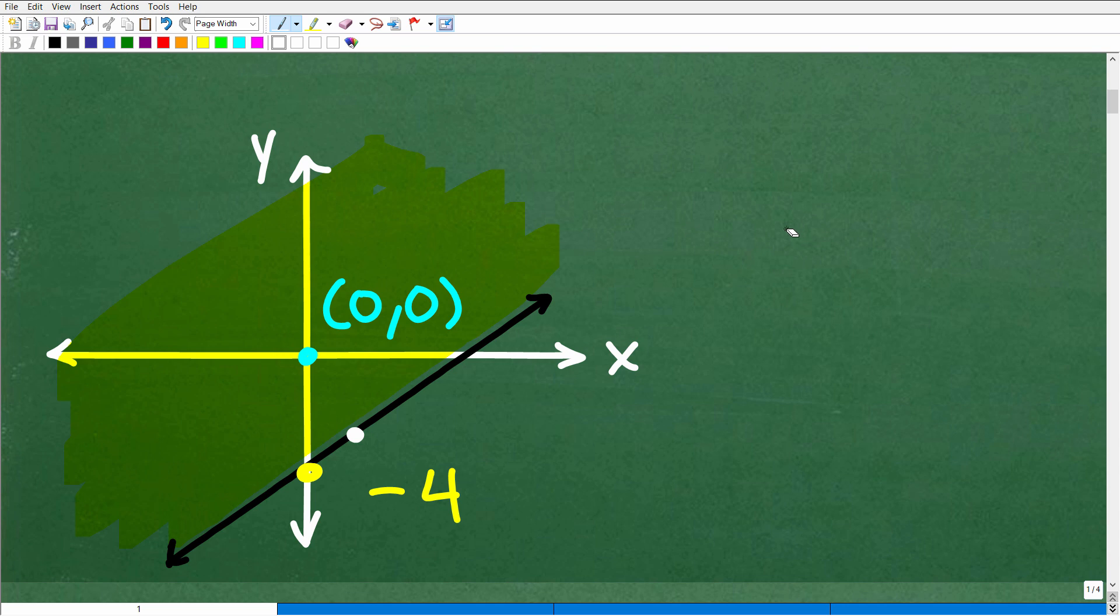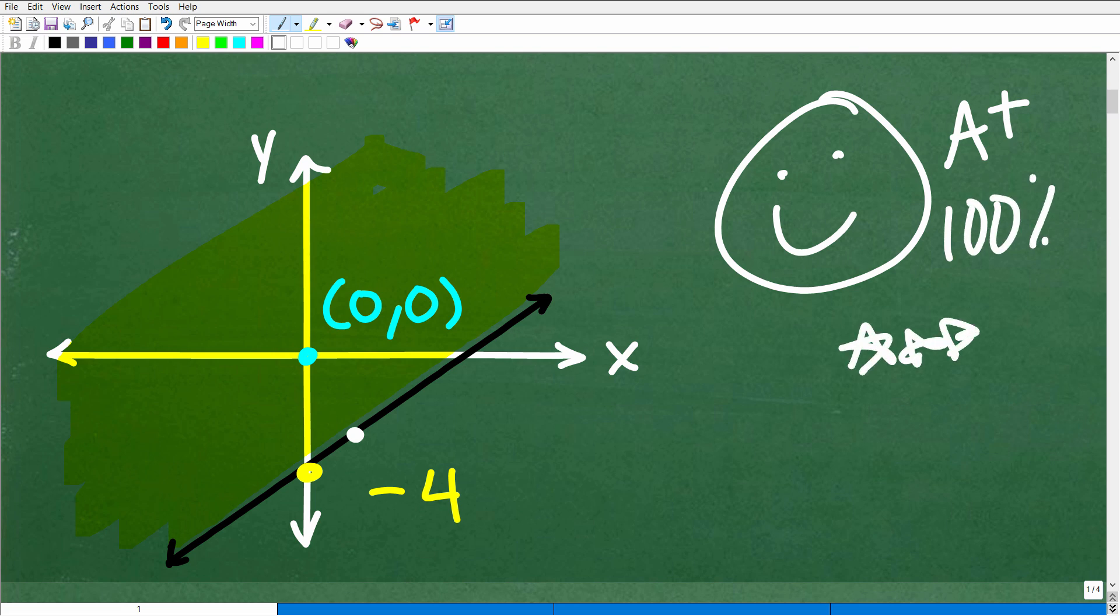But if you got this correct, that is fantastic. Matter of fact, let's give you a nice little happy face and A+, a 100%, and a few stars so you can tell your friends and family that you know a thing or two about linear inequalities. They'll be so impressed with that information. They might even take you out to lunch.